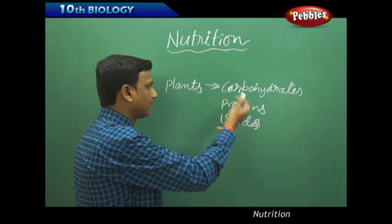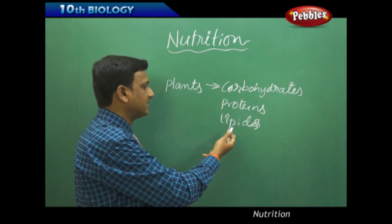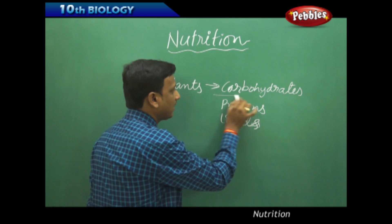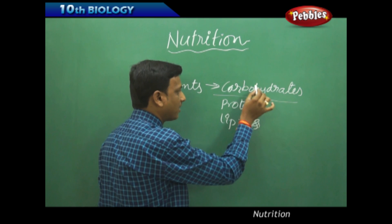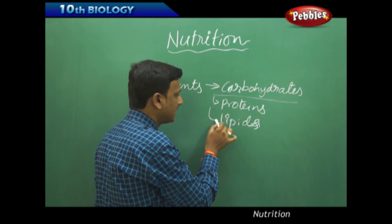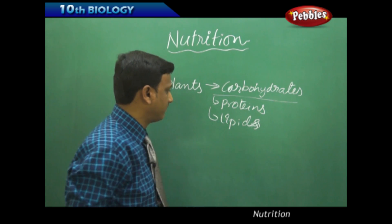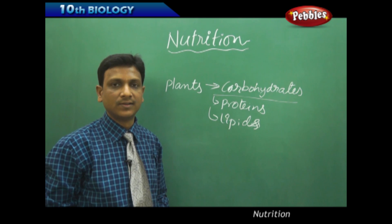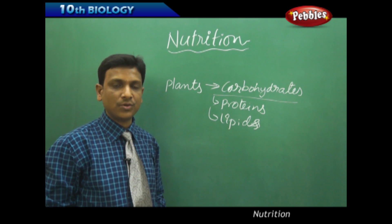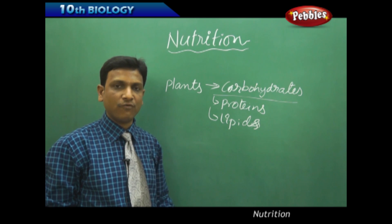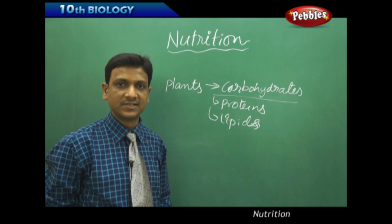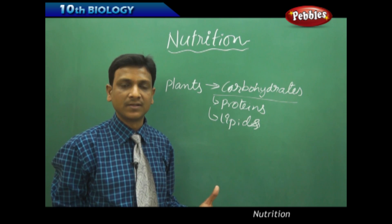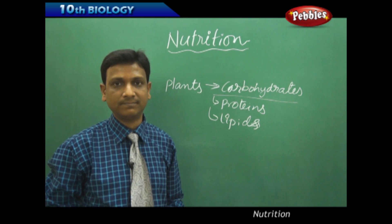We get carbohydrates, proteins, and lipids from plants. Plants basically make carbohydrates, proteins, and lipids. So if all organisms are dependent on plants, someday all the plants must be used up.